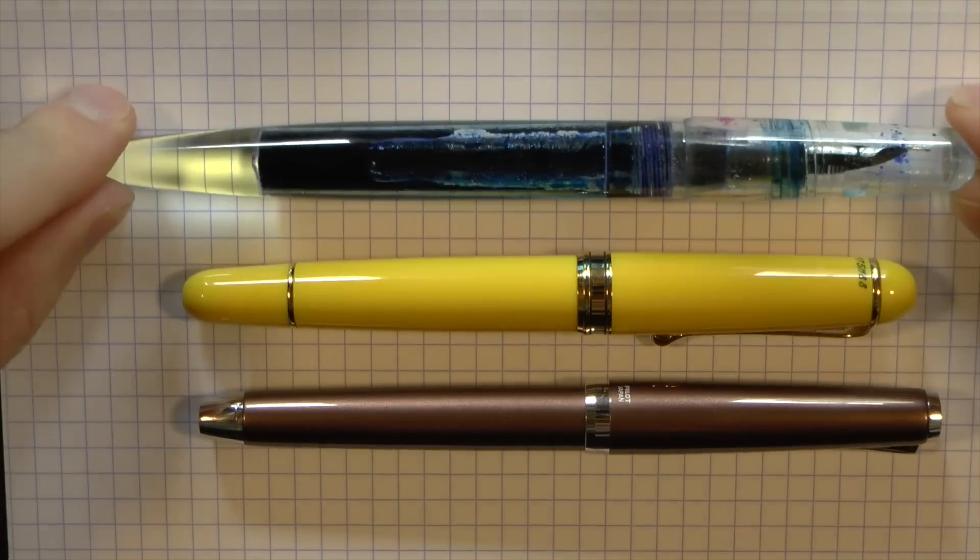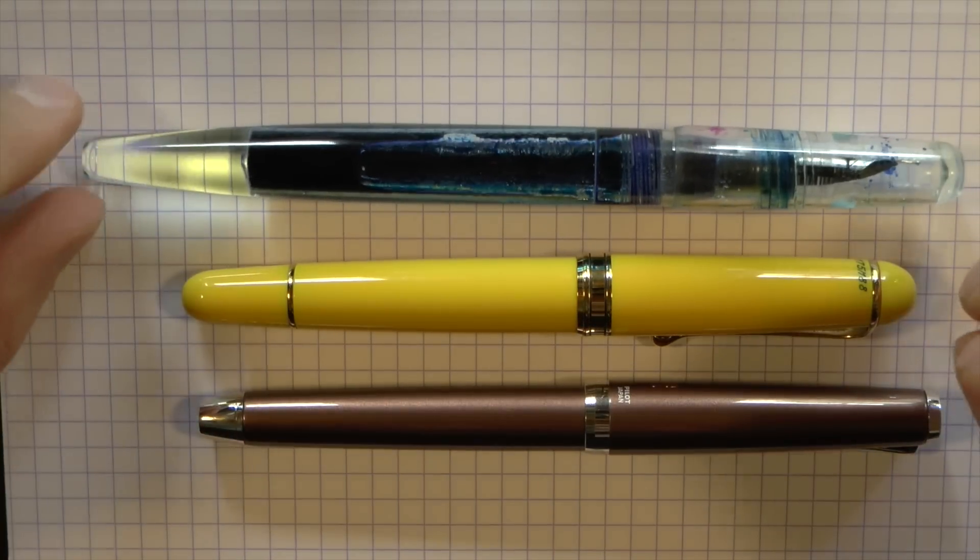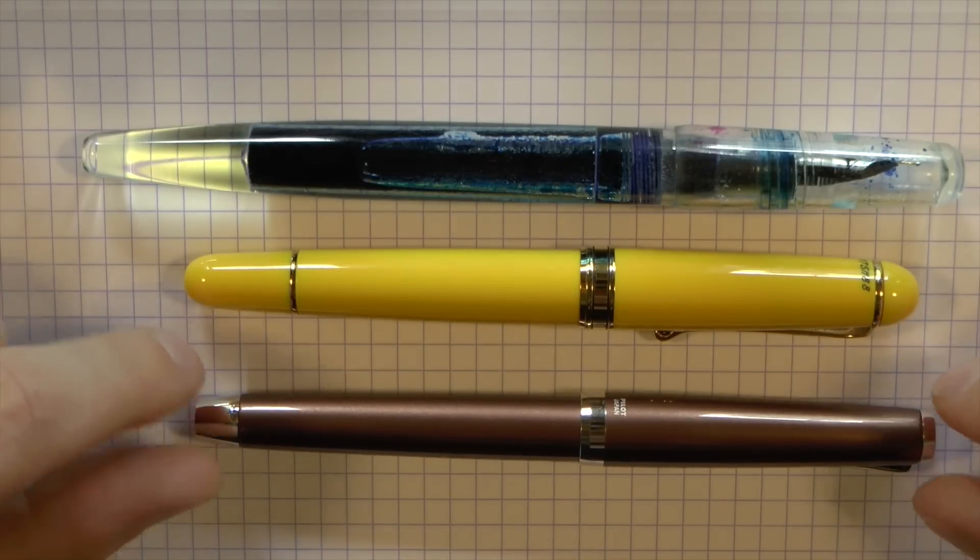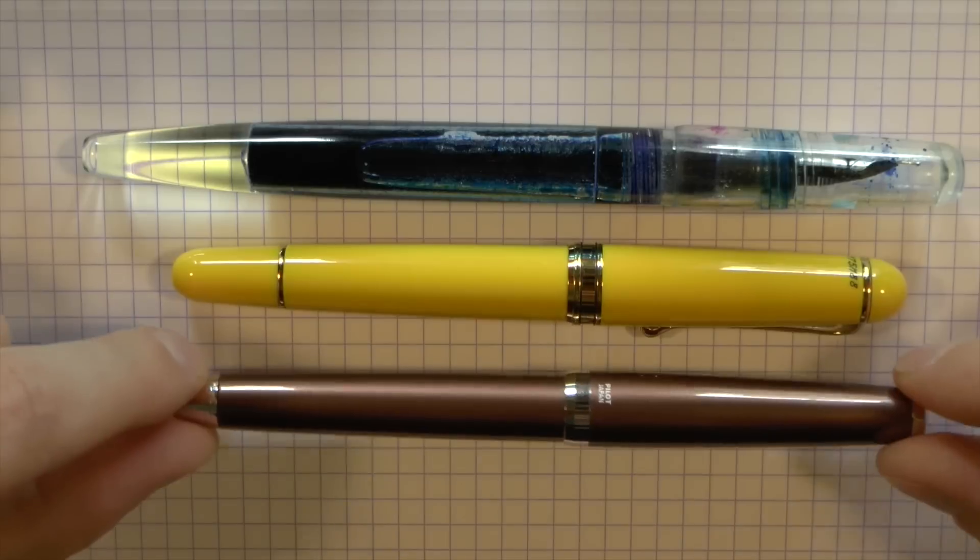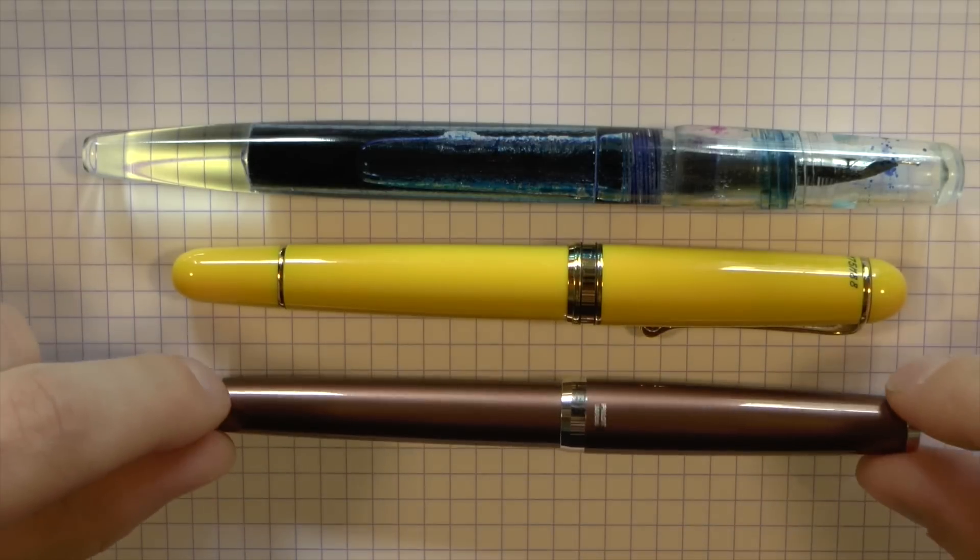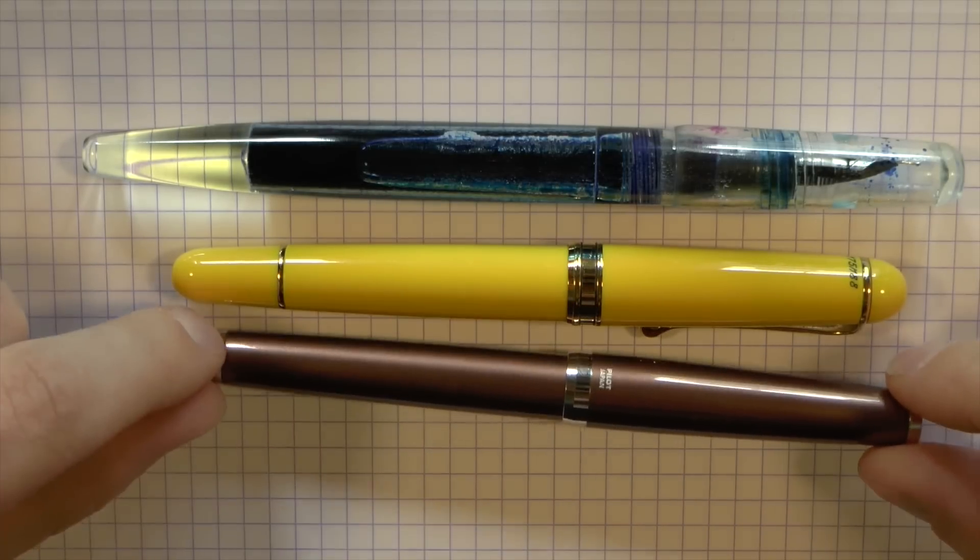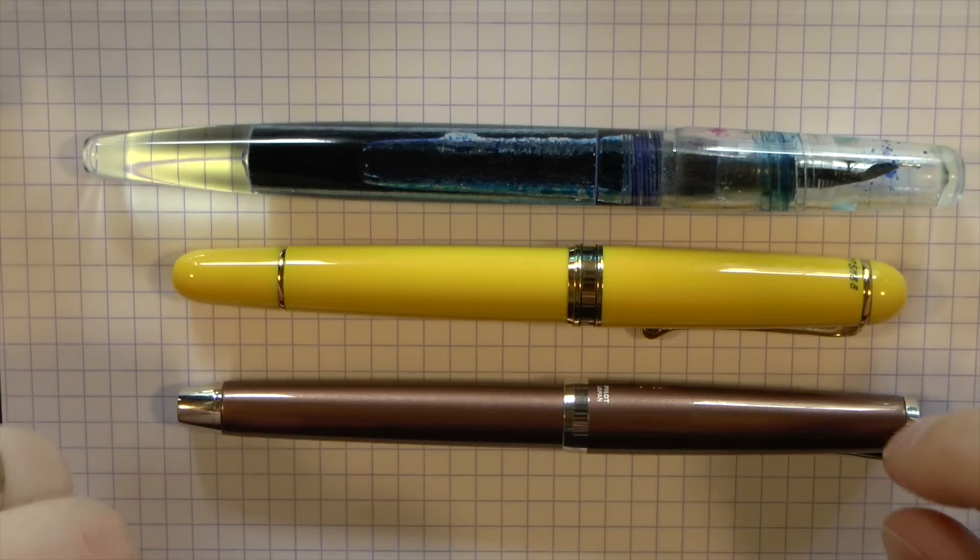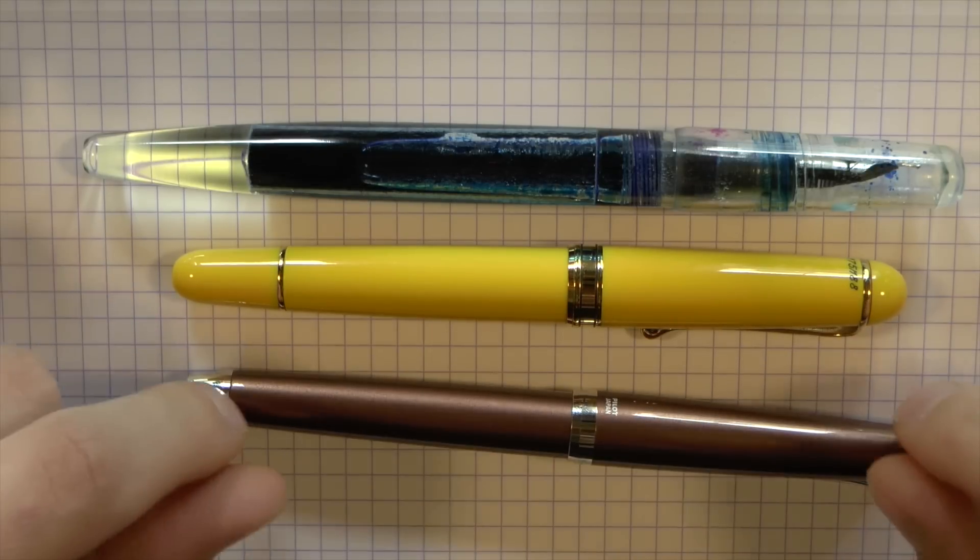So to keep things simple, three pens. Franklin Christoph, Model 66, in ancient glass. The Aurora 88, their special anniversary edition with their 14K flex nib. And the Pilot slash Namiki Falcon. This is actually labeled Pilot, so I'm going to say Pilot Falcon. And this is the metal-bodied version. There's also a resin version, which is I think about $100 cheaper.